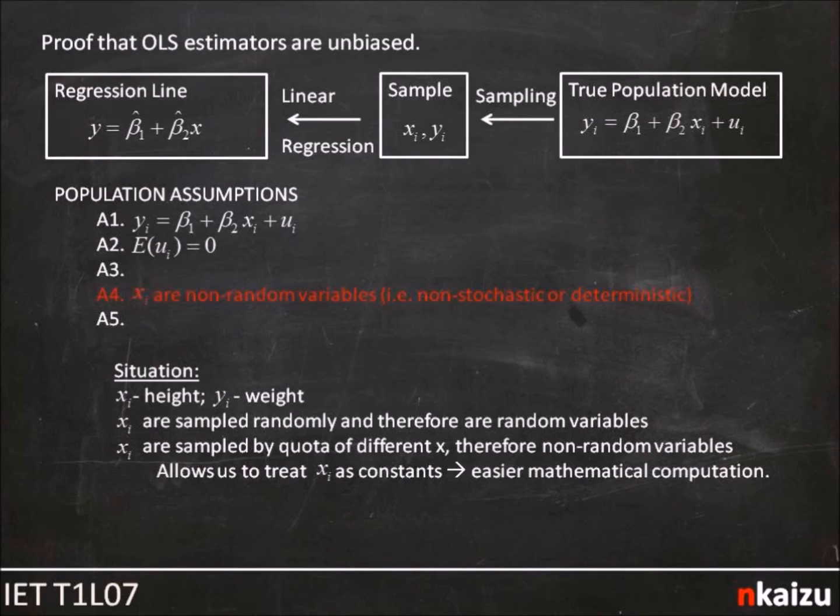Compare this to picking by quota, sampling by quota, where every time you sample, you proactively seek out twenty people under six feet tall, and five people over six feet tall. Why is this difference important? Well, in the second case, the X's are deterministic. Before we've sampled a single person, we've already decided how many people of each height we will sample. The only unknown is the Y's that correspond to each X. This small difference in sampling makes a huge difference in our assumptions, and ultimately in how easy it is to prove OLS estimators are unbiased. Essentially, this assumption allows us to treat X_i as constants, and this makes for much easier computation.